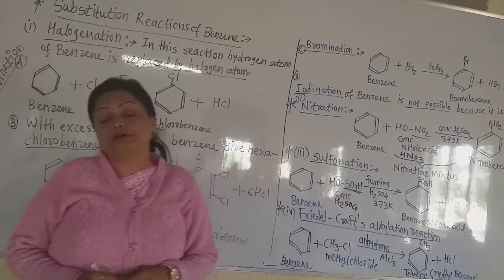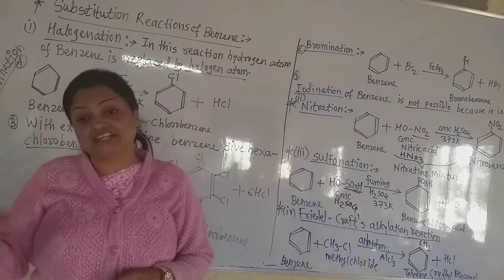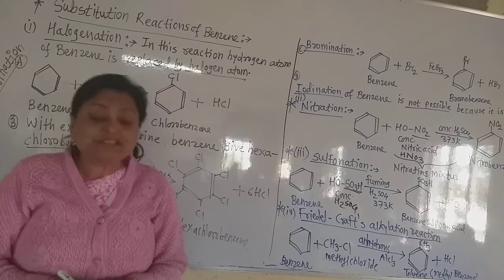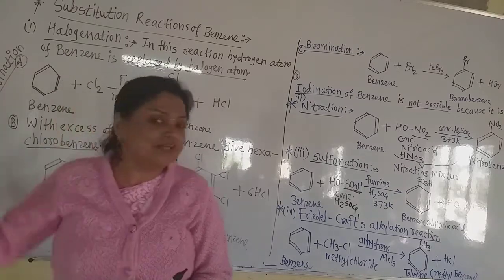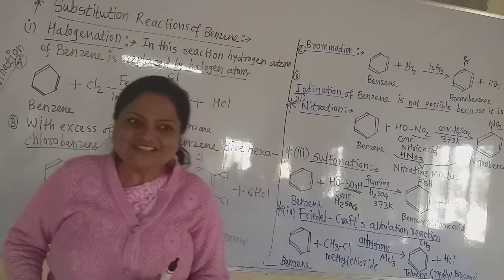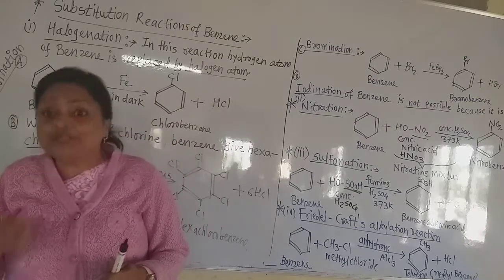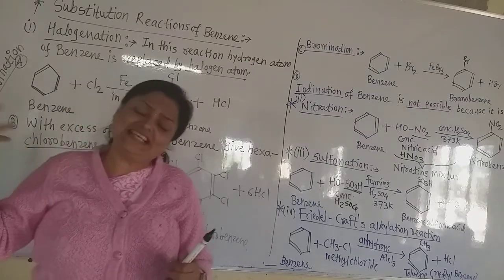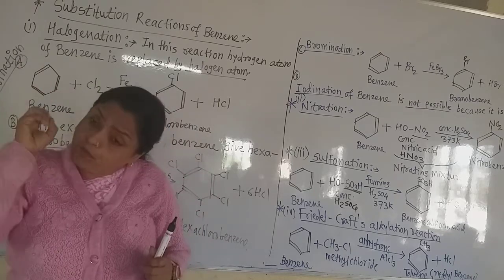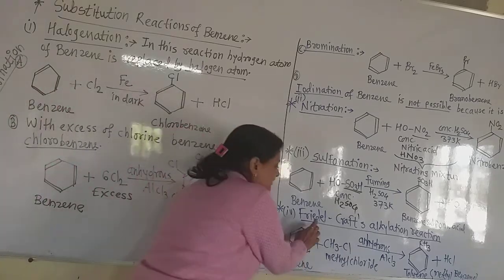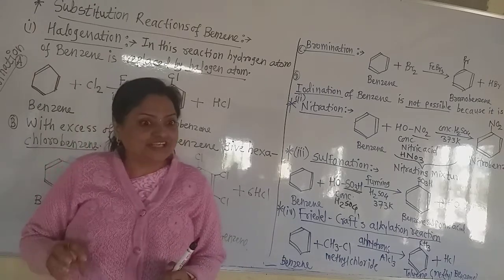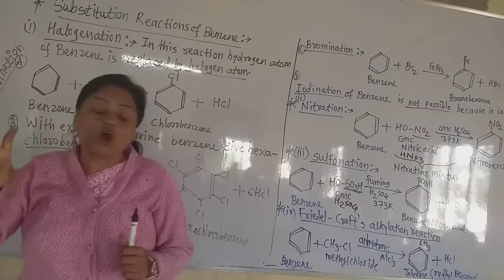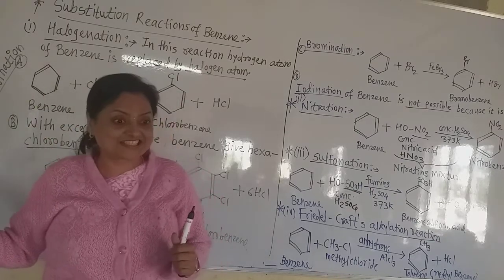The next reaction is the Friedel-Crafts alkylation — there is also Friedel-Crafts acylation, which we will see later. As the name suggests, alkylation means the introduction of the alkyl group into the benzene ring. Introduction of alkyl group into the benzene ring is called alkylation of benzene. In acylation, there is introduction of the acyl group. This reaction is named after the scientists Friedel and Crafts.